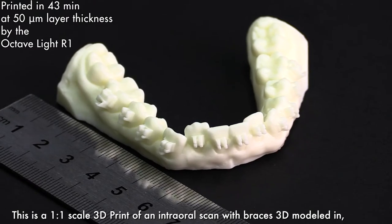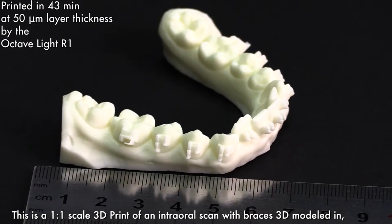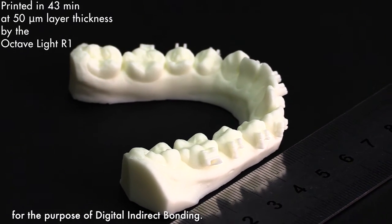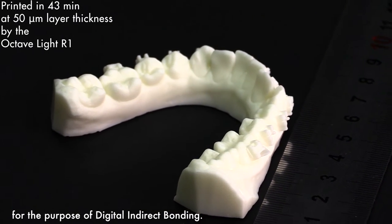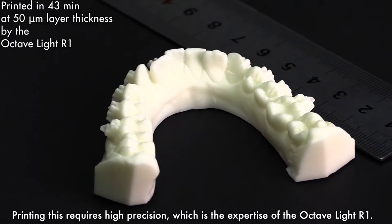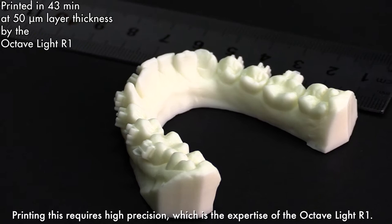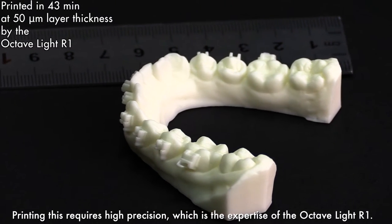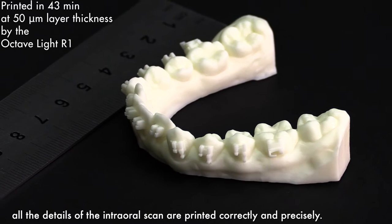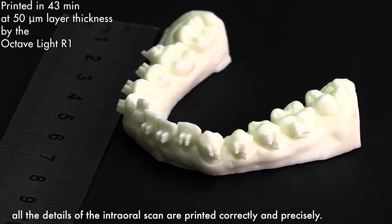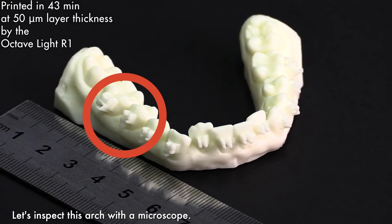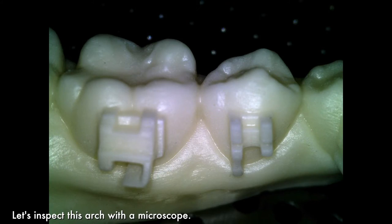This is the one-to-one scale 3D print of an intra-oral scan with braces 3D modeled in for the purpose of digital indirect bonding. Printing this requires high precision, which is the expertise of the Octav Light R1. Even with the high-speed printer setting, all the details of the intra-oral scan are printed correctly and precisely.